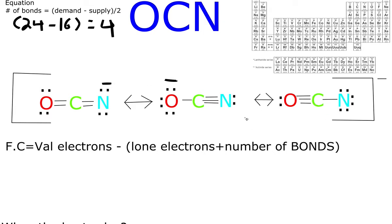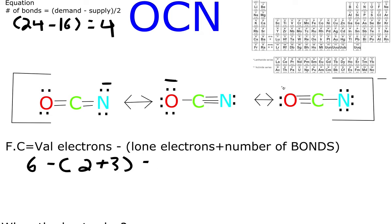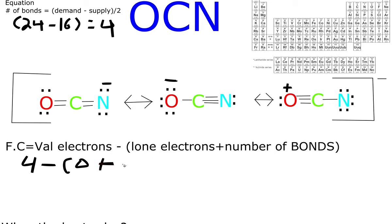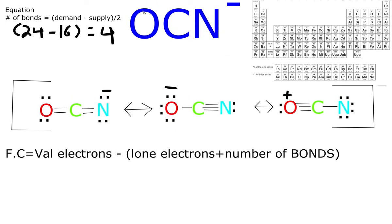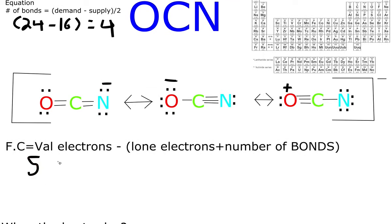For the third molecule, oxygen is in group 16 — 6 valence, minus 2 lone electrons, plus 3 for the triple bond — 6 minus 5 is positive 1. Carbon has 4 valence, no lone electrons, a triple and single bond for 4 total — 4 minus 4 is 0. Nitrogen has 5 valence, minus 6 lone electrons, plus 1 single bond — 5 minus 7 is negative 2. So this structure has a +1 on oxygen and a -2 on nitrogen.